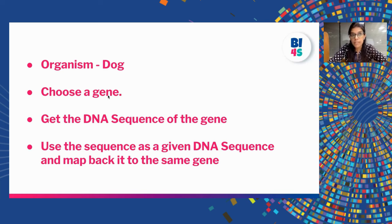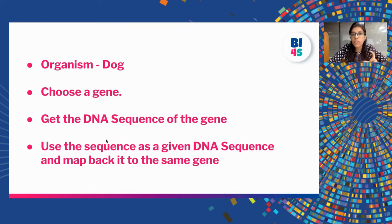For today's exercise, we will be looking at the organism known as dog. We will choose a gene from the dog's genome, get the DNA sequence of that particular gene, and then from the FASTA sequence of the gene, we will take a segment of the sequence as a given DNA sequence and then try to map it back and see if we land at the same gene again.